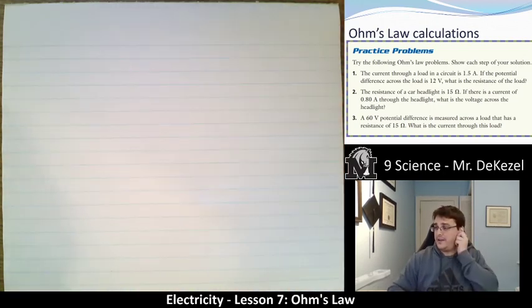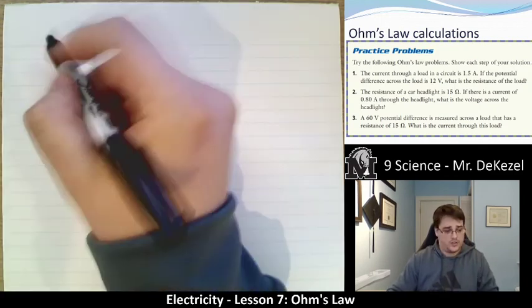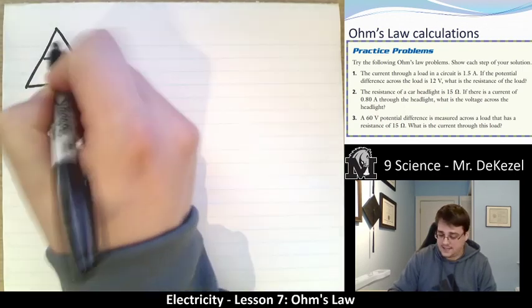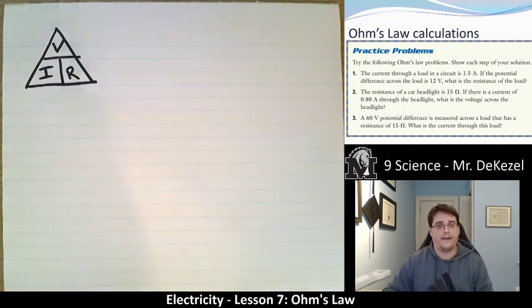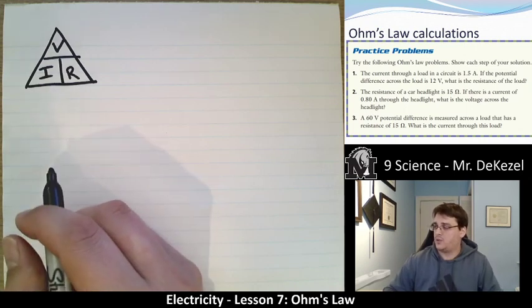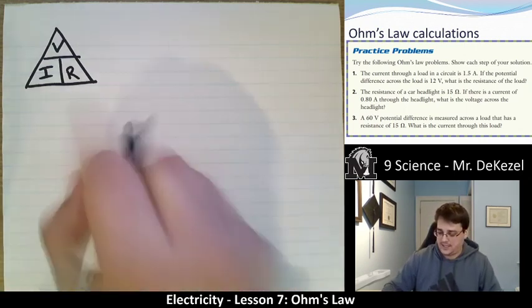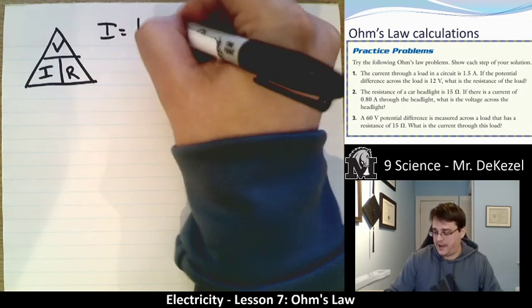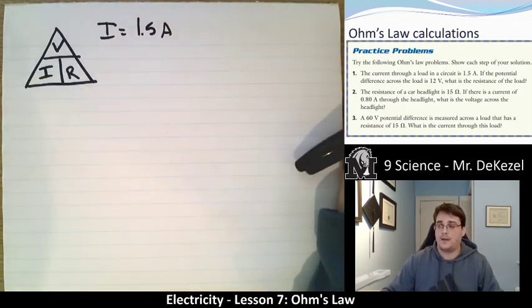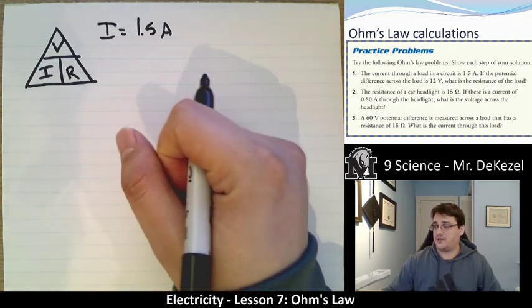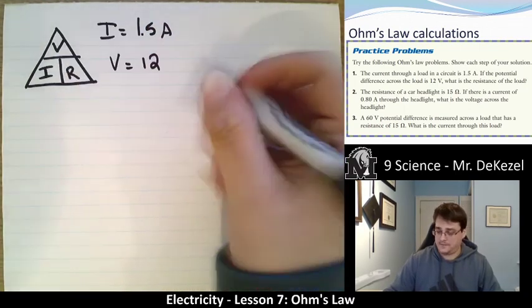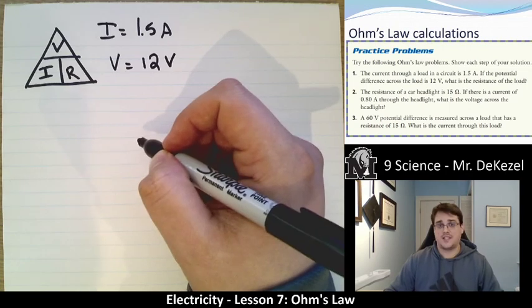So practice problem one. We're going to use Ohm's law. So I'm going to draw the triangle first. And you can definitely do this at the top of any assignment or quiz or test. Draw Ohm's law. So V on top of I and R. So the first question asks us, the current through a load in a circuit is 1.5 amps. So I know current is I. So what I always do is I write down what I know. I is equal to 1.5 amps. It told me that straight away. Next, the potential difference across the load is 12 volts. It tells me that volts is equal to 12. That is V, 12 volts. What is the resistance of the load?